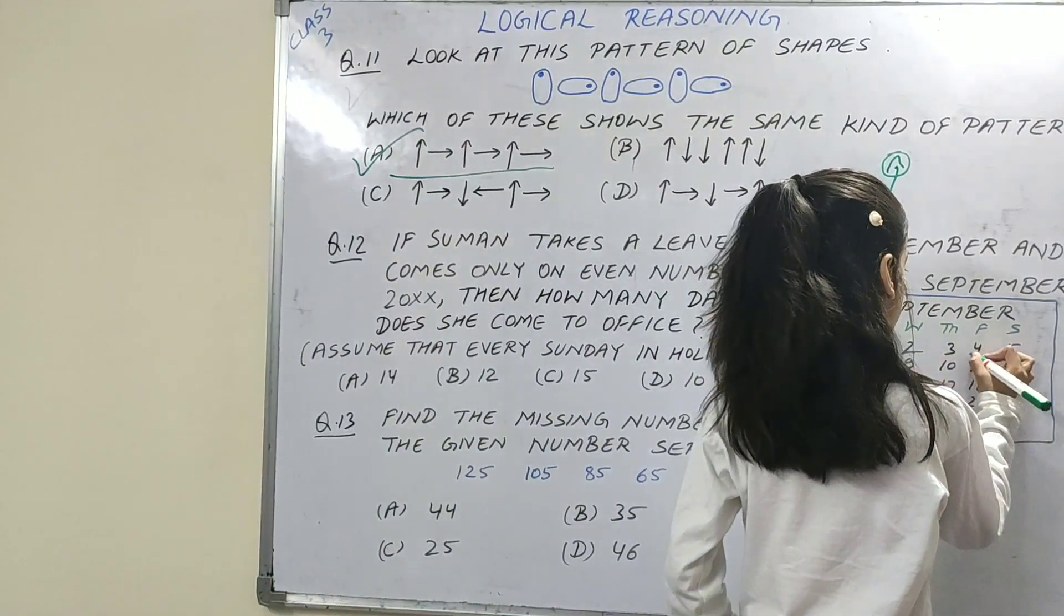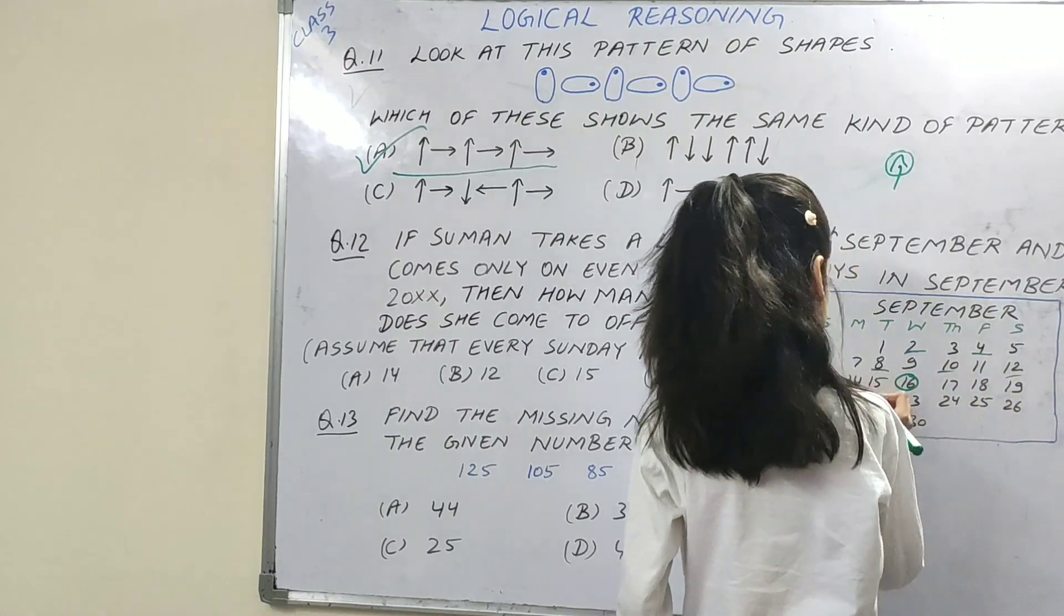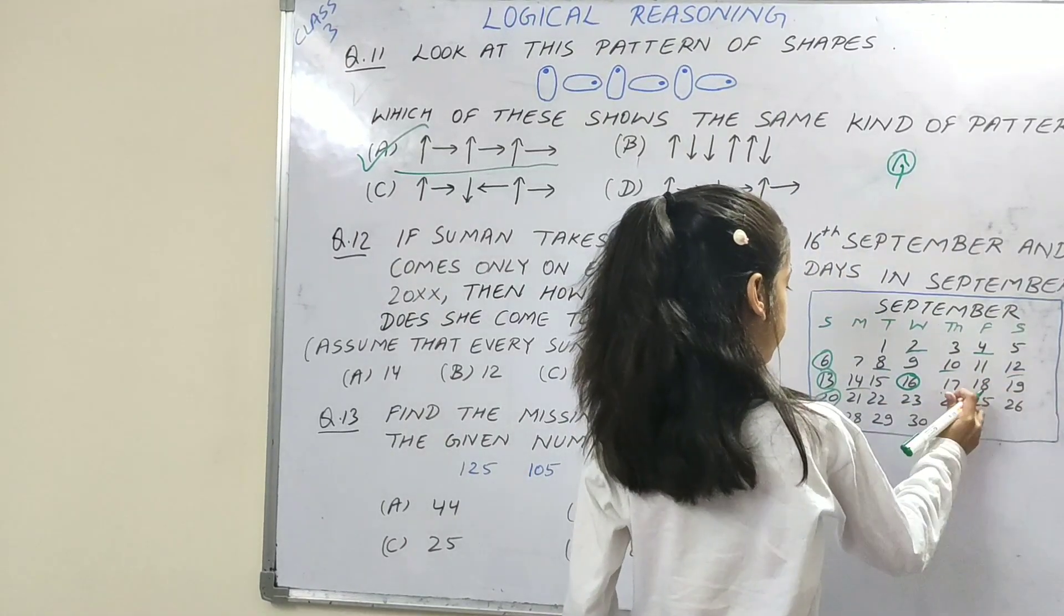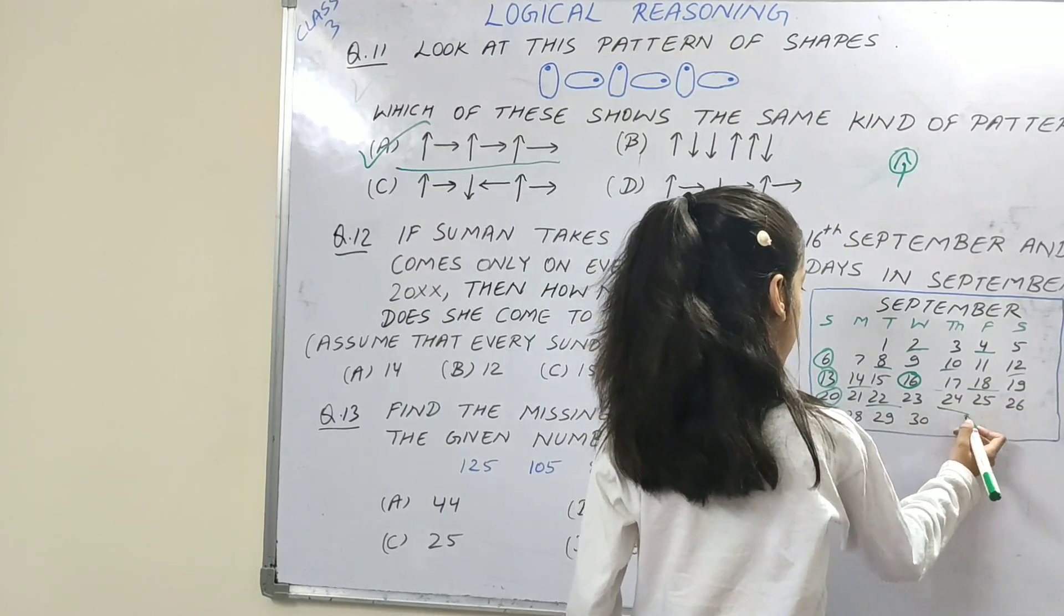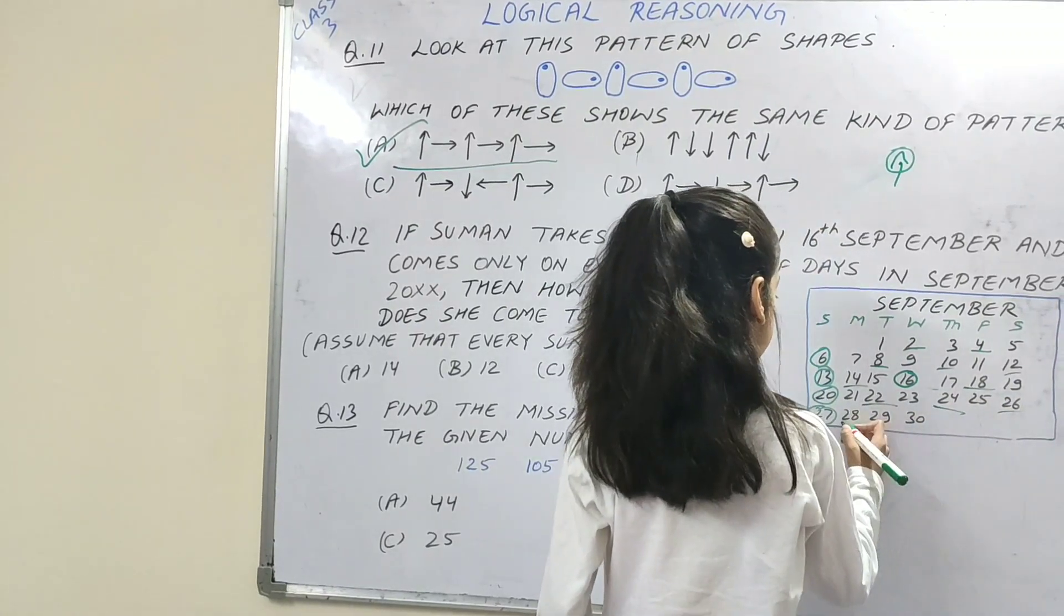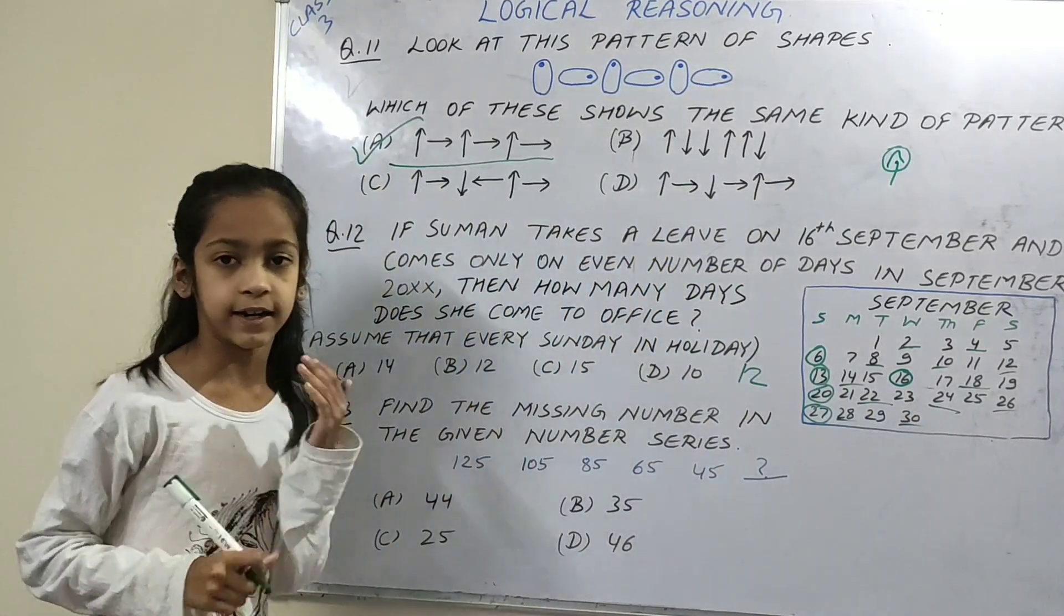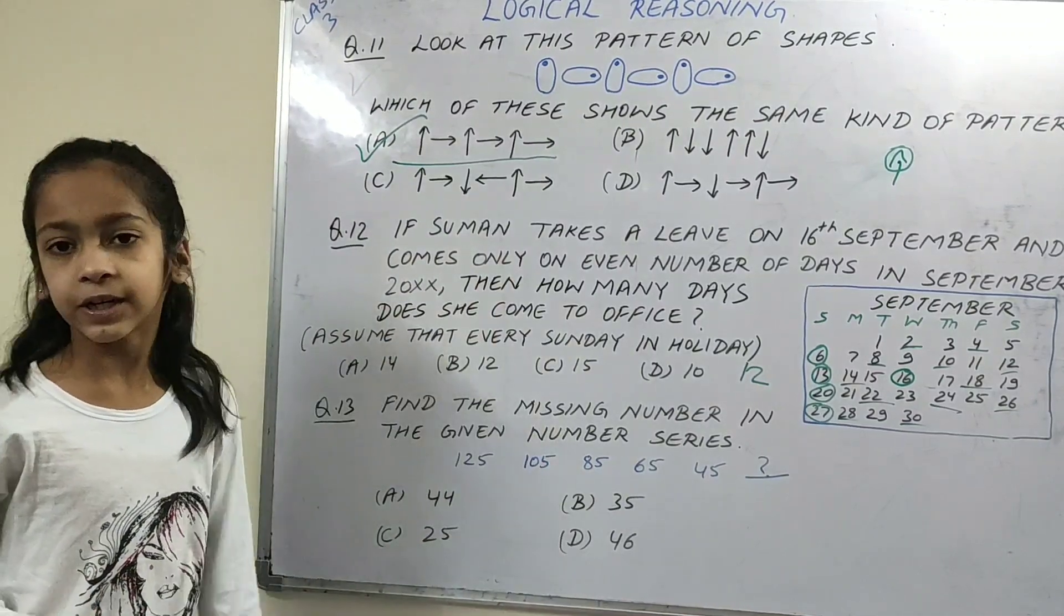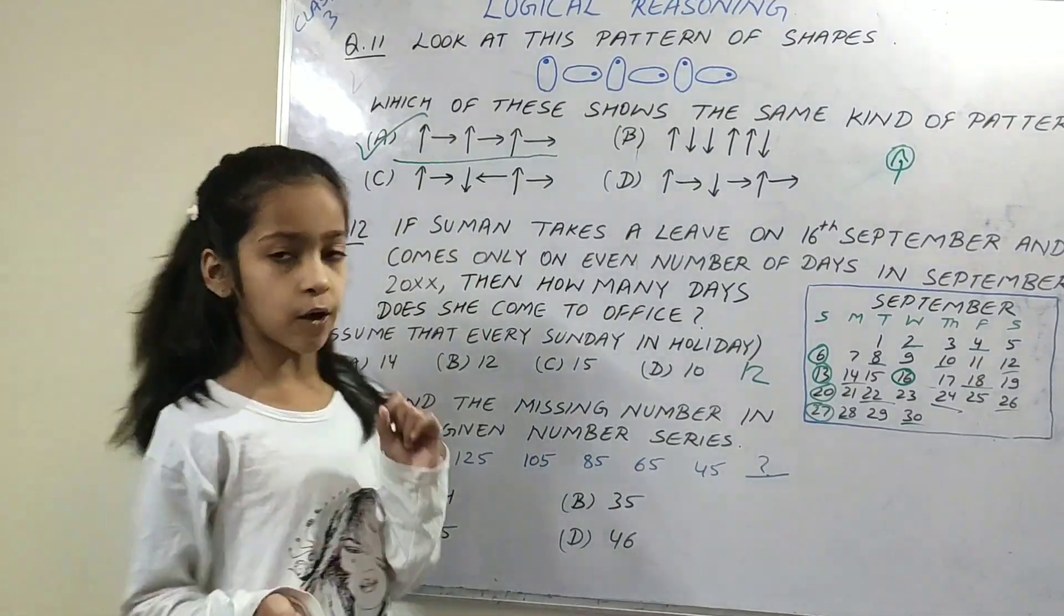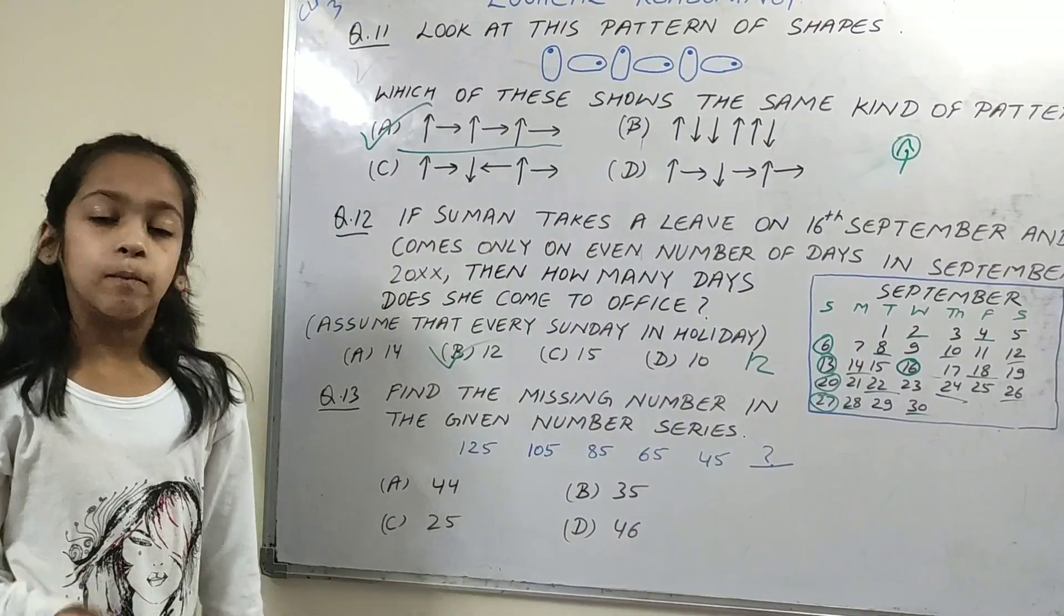1, 2, 3, 4, 5, 6, 7, 8, 9, 10, 11, 12. Totally 12 even days. We will also count on 16 and we will not count on 16. So the option is 12 is the right option.